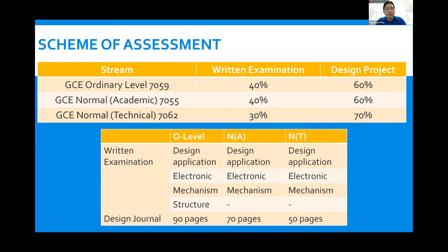Another significant difference is the number of pages that a student will have to produce for his or her coursework: 90 pages limit for O-level, 70 pages and 50 pages for Normal Academic and Normal Technical respectively. We offer upstream curriculum for students who show good potential. For example, a Normal Academic student may be offered to take O-level in Secondary 3 or Secondary 4.